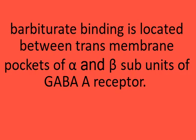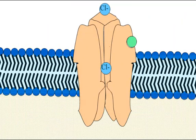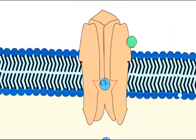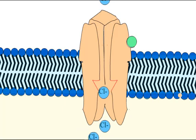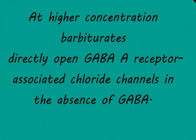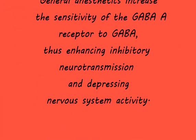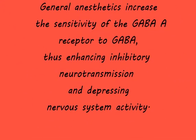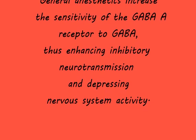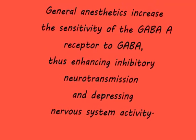The barbiturate binding site is located within the transmembrane pockets of the alpha and beta subunits of the GABA-A receptor. Barbiturates potentiate GABA-induced chloride currents by prolonging the periods during which the channel remains open. At higher concentrations, barbiturates can directly open GABA-A receptor-associated chloride channels in the absence of GABA. General anesthetics increase the sensitivity of the GABA-A receptor to GABA, thereby enhancing inhibitory neurotransmission and depressing nervous system activity.